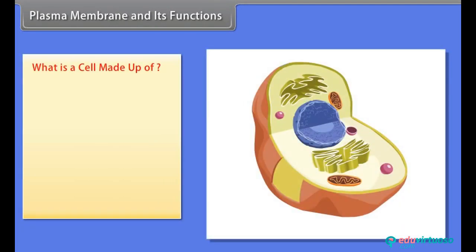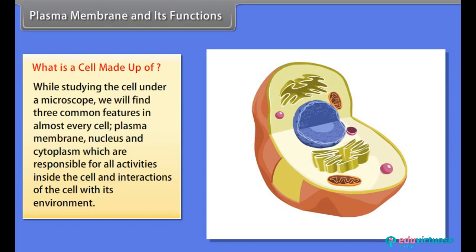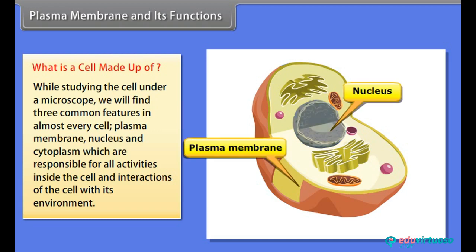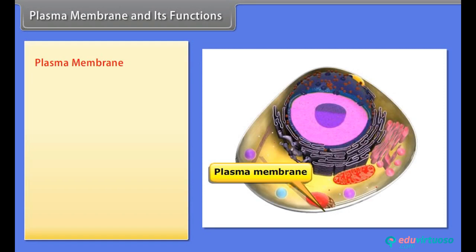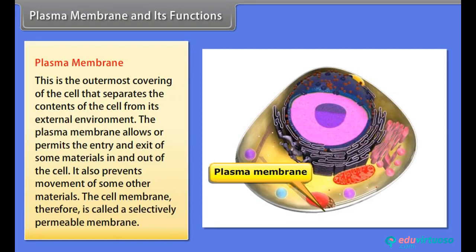While studying a cell under a microscope, we find three common features in almost every cell: plasma membrane, nucleus, and cytoplasm. These are responsible for all activities inside the cell and interactions of the cell with its environment. The plasma membrane is the outermost covering of the cell that separates the contents of the cell from its external environment.